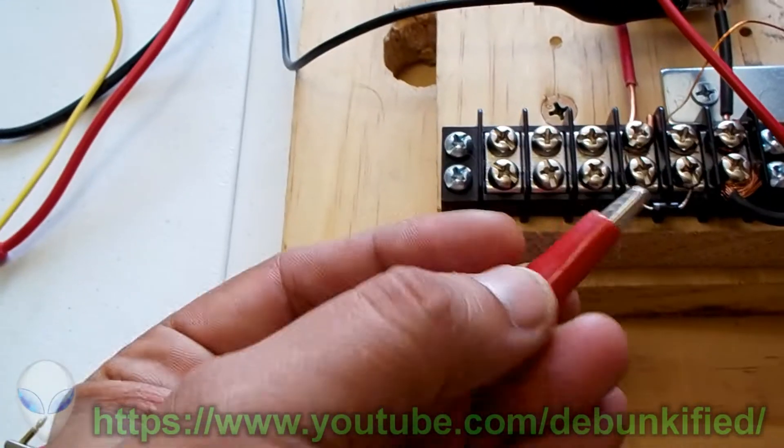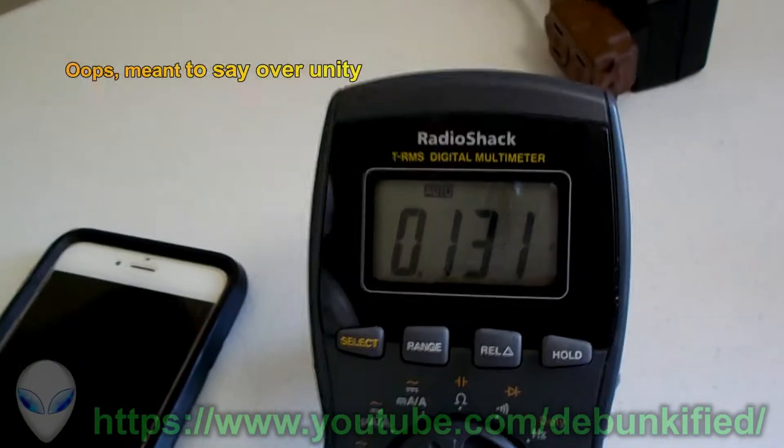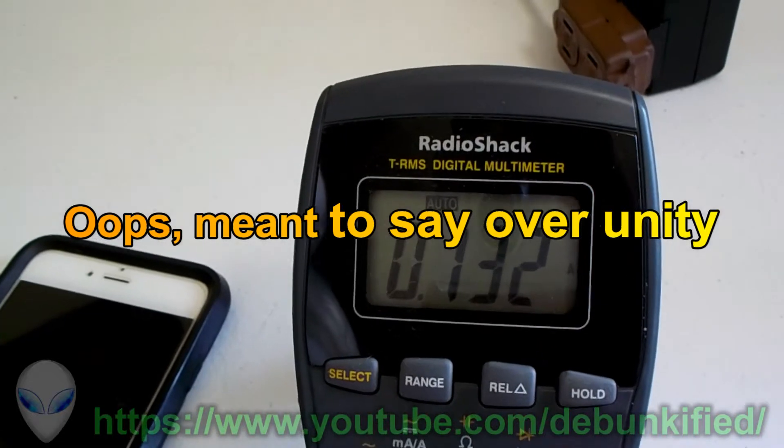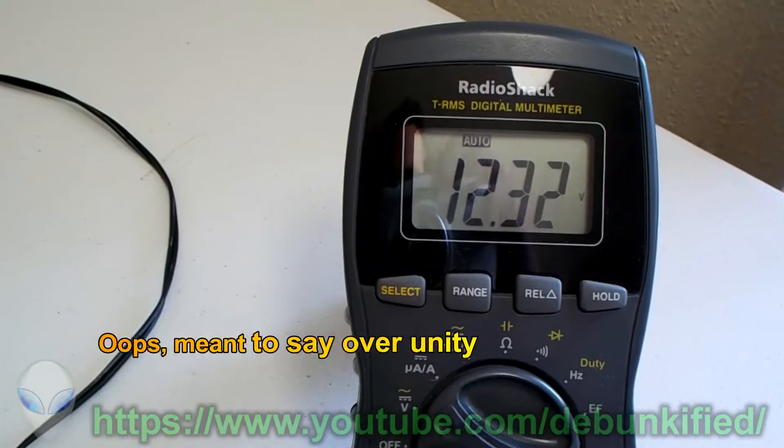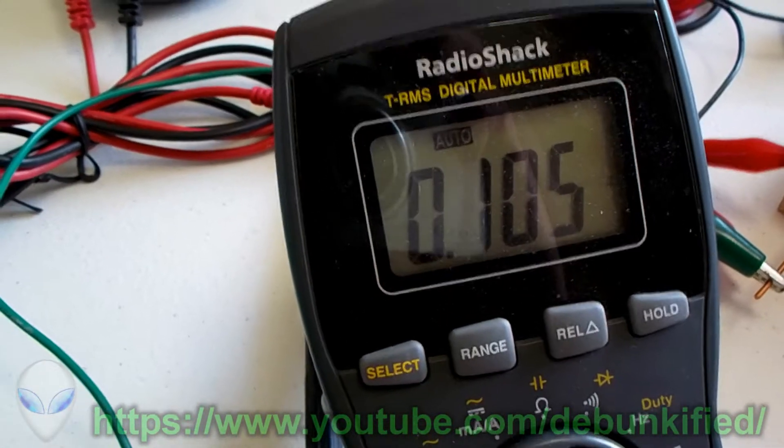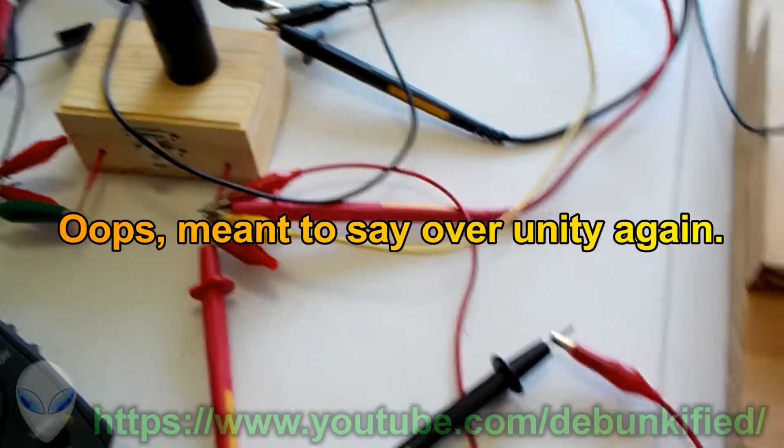But if we connect our return, now it's under unity, about 0.133 amps, 12.32 volts coming out, 0.105 amps and 19.30 volts. So it goes back to unity now.